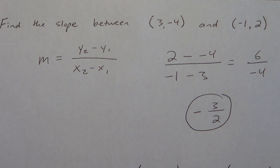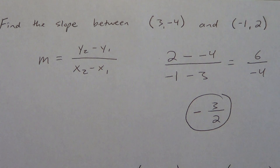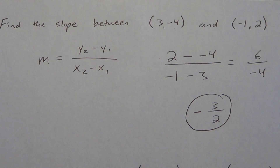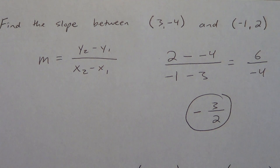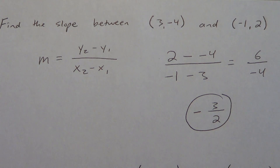We usually just put that negative out front, and then reduce to 3 over 2, and that is our answer. We do not change that to 1 and a half — it makes it harder to work with. We don't usually write slopes as decimals like 1.5, because if we get something like 5 sevenths, that's a decimal that just keeps repeating forever. So we just leave them as reduced fractions for our slopes.